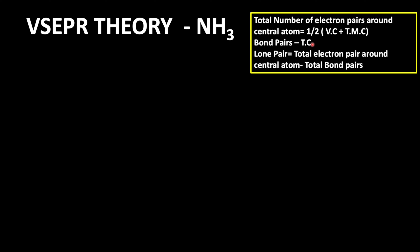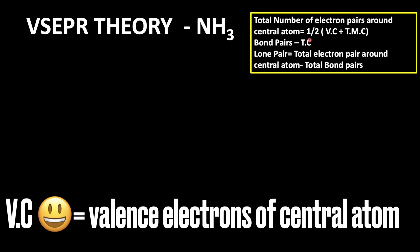Using the formula shown here, let us try to predict the geometrical shape of the NH3 molecule with the help of VSEPR theory. The total number of electron pairs around the central atom is equal to half times (Vc plus Tmc), where Vc is the valence electrons of the central atom.